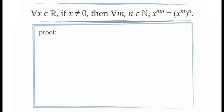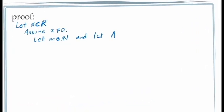For our last example, we're going to prove for all values of x in the real numbers, if x is not equal to zero, then for all values of m and n in the natural numbers, x to the exponent m times n is equal to the quantity x to the exponent m raised to the exponent n. To prove this, we let x be an arbitrary real number and assume x is not equal to zero. We can let m be an arbitrary natural number, choosing to use the principle of universal generalization for the variable m, and then use the principle of mathematical induction on the variable n. We begin by considering the set of those natural numbers n for which x to the power mn is equal to x to the power m raised to the exponent n, for our chosen arbitrary constant m.